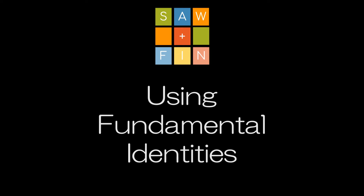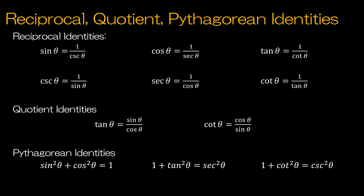Using fundamental identities, we have learned all of the identities but we're going to review them here so that we have them fresh in our minds. We have the reciprocal identities, which is the reciprocal of each of the six trigonometric functions. For instance, sine of theta is equivalent to one divided by cosecant of theta, whereas cosecant of theta is one divided by sine of theta, so they are reciprocals of one another.